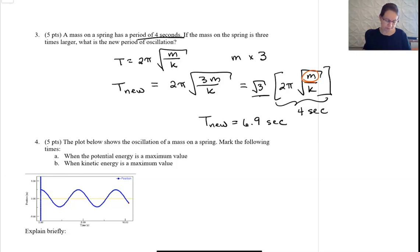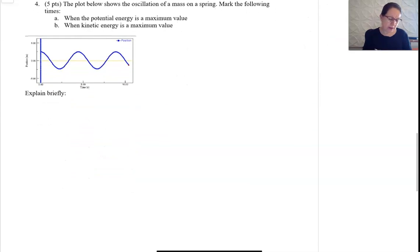For this last problem, this is showing position versus time. The potential energy is at the max at the extremes where it's stretched or compressed fully, and the maximum kinetic energy will be at maximum speed, so that would be biggest slope.